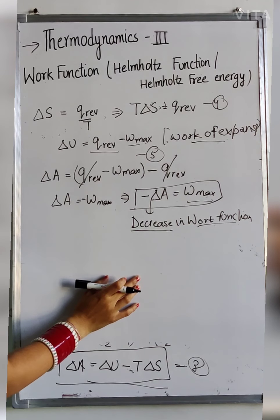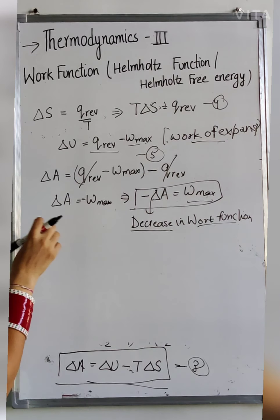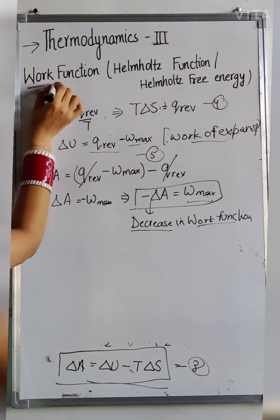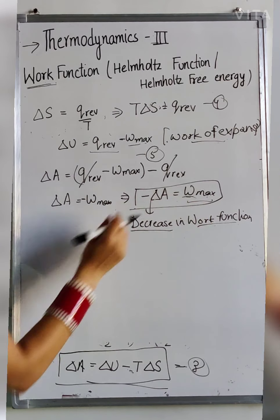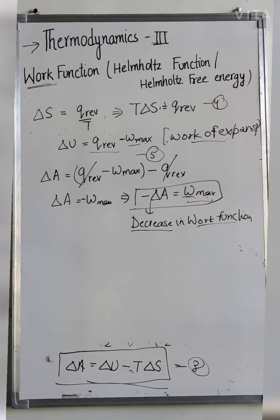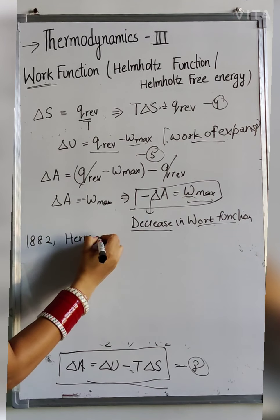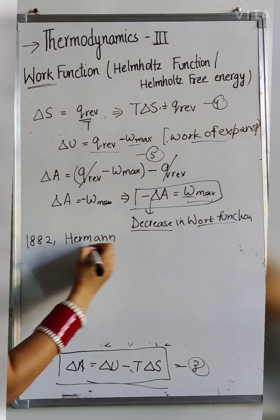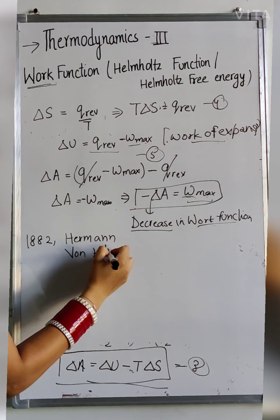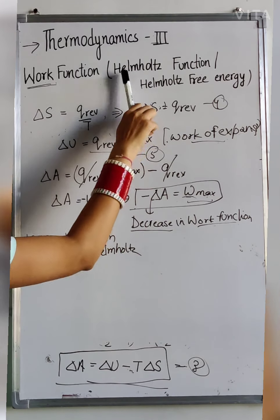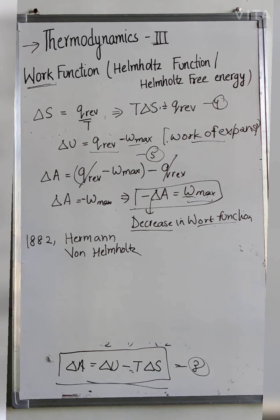This thermodynamic quantity is called the work function. The other name — Helmholtz function and Helmholtz free energy — comes from the German physicist Hermann von Helmholtz, who introduced it in 1882. This is all about the work function.